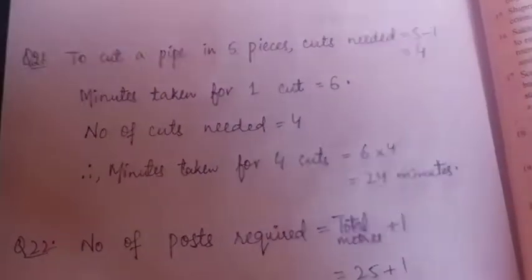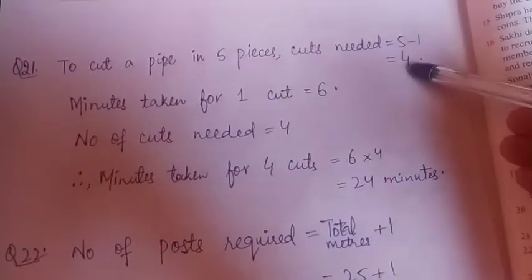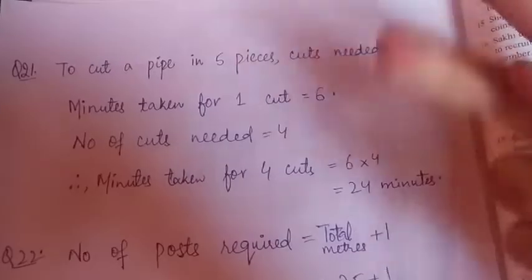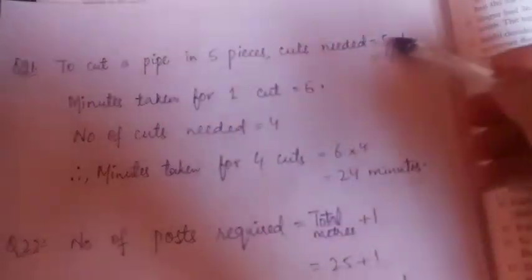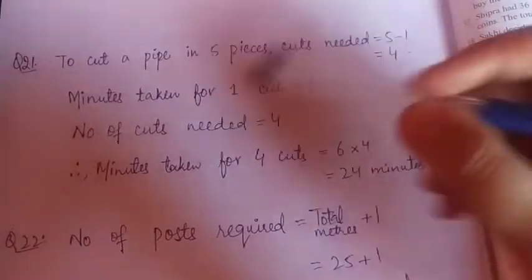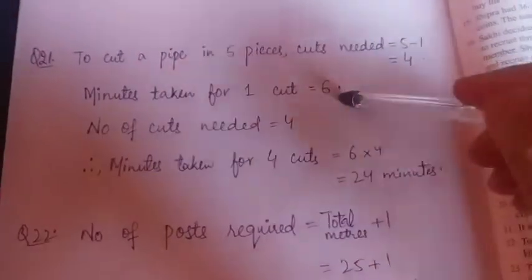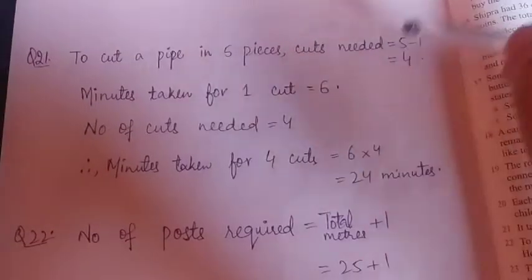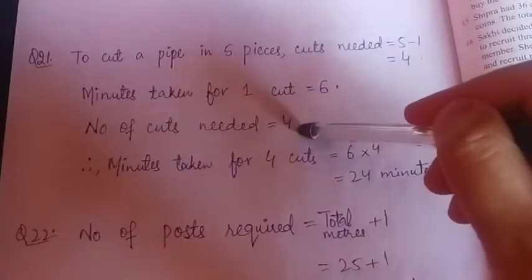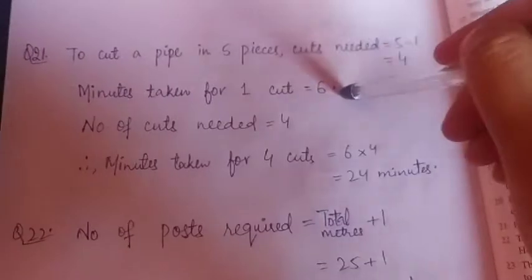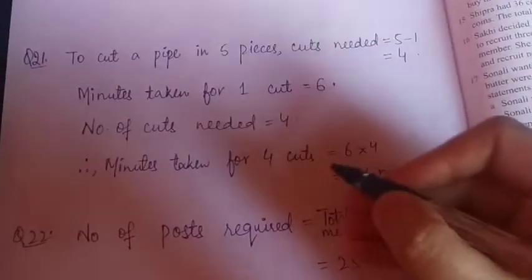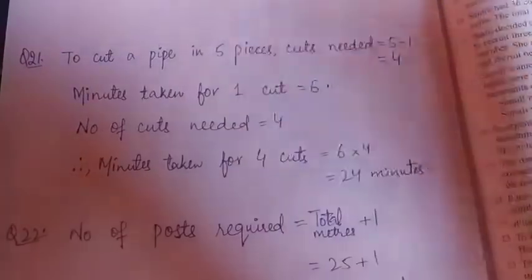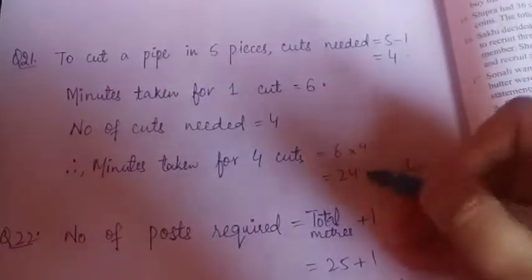Dekho yahan pe, just see. To cut a pipe in five pieces, cuts needed will be five minus one, that is four. Because two ke liye agar ek hai, teen ke liye do, four ke liye minus one karenge. To five pieces ke liye it will be five minus one, that is four. And minutes taken for one cut is six minutes. Chhe minute mein ek cut ho raha hai. Or hamein kitne cuts karne hai? Chaar. Agar chhe minute mein ek cut ho raha, so chaar cuts kitne minute mein honge?